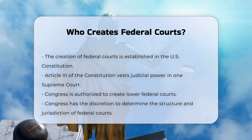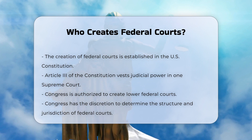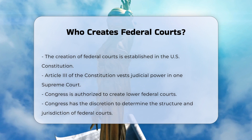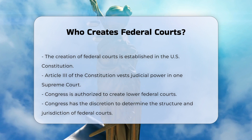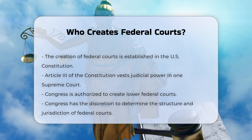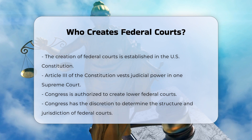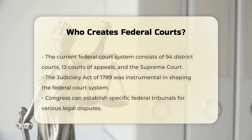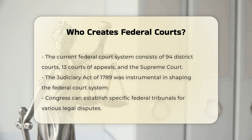Role of Congress. Congress has significant discretion in determining the structure and jurisdiction of the federal courts. It is empowered to establish courts inferior to the Supreme Court, such as the district courts and courts of appeals. Congress has used this authority to create the current three-tiered system of federal courts.